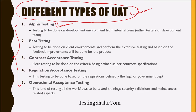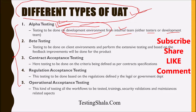The first type is Alpha testing. Alpha testing will be done on the developer environment by the internal team. The internal team could be testers, the development team, business analysts, or the product owner. Anyone from the internal team who does testing on the development environment — that is Alpha testing. It is not done by the client.